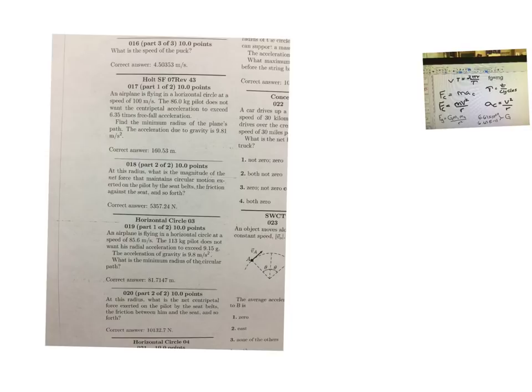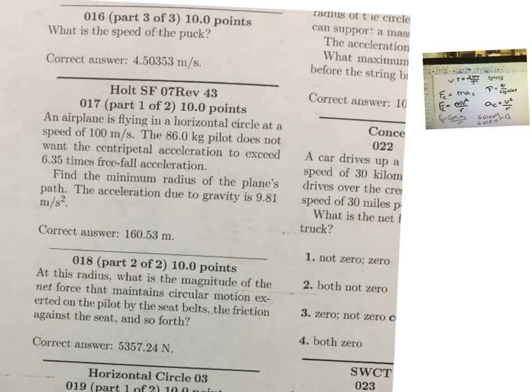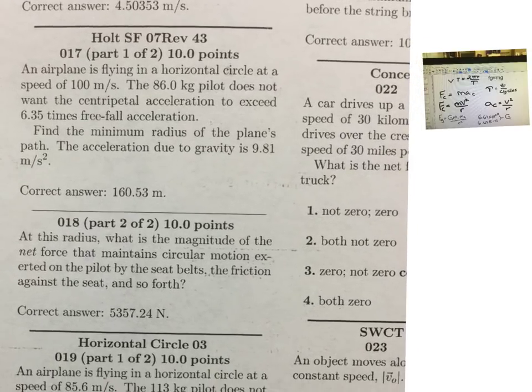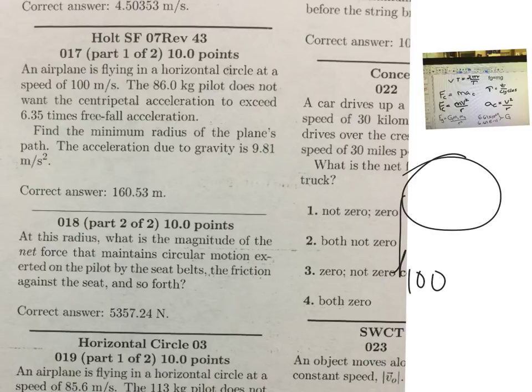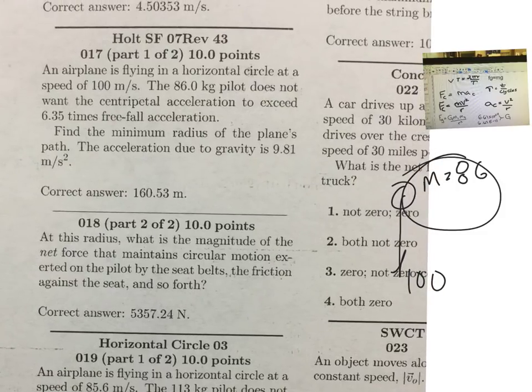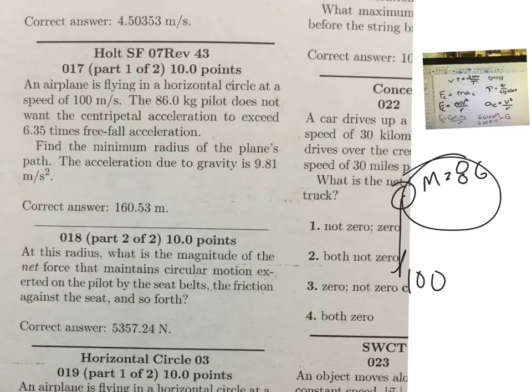Let's look at 17 because 17 is kind of conceptually really strange, but it's not that bad. Let me just show you how to set this one up. It's an airplane flying in a horizontal circle at a speed of 100 m/s, so automatically I'm going to just draw this out. So I do the tangential speed 100. An 86 kilogram pilot, so M is 86, once the centripetal acceleration, so does not want the centripetal acceleration to exceed 6.35 times freefall acceleration. Find the minimum radius. So I'm looking for the radius, r equals question mark, of the plane, and you're going to use g equals 9.81.